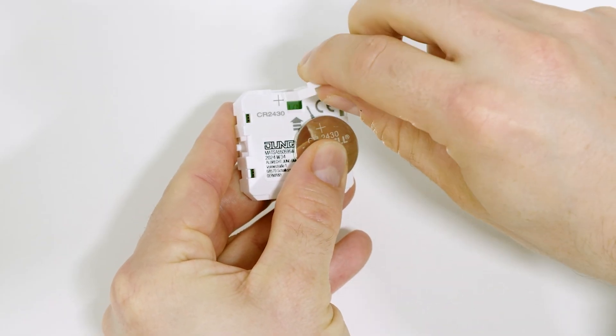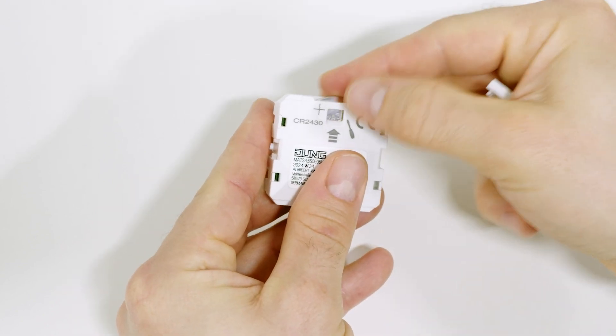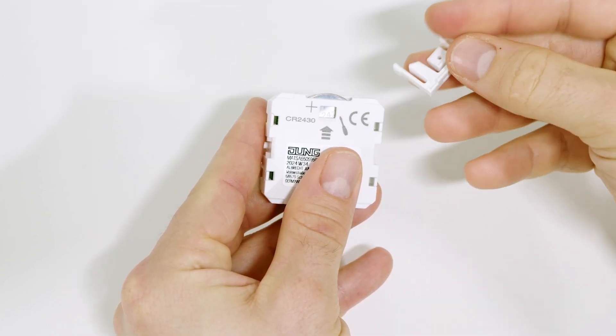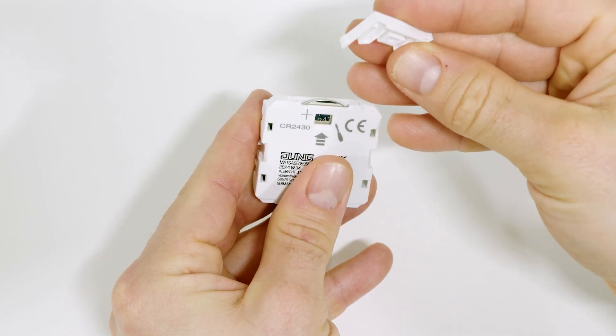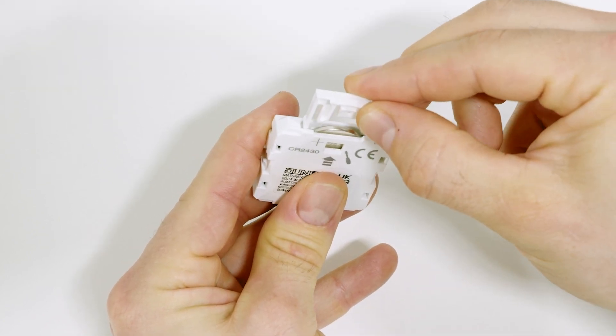Insert a new battery into the battery compartment with the correct polarity. Slide the battery compartment cover into the battery compartment in the correct position until the tab engages.